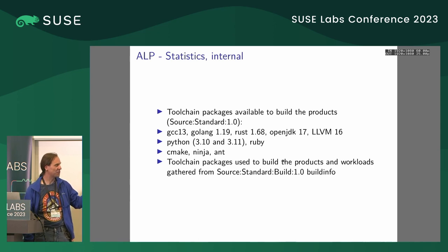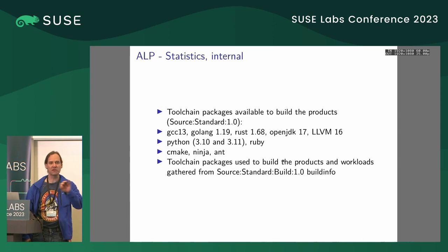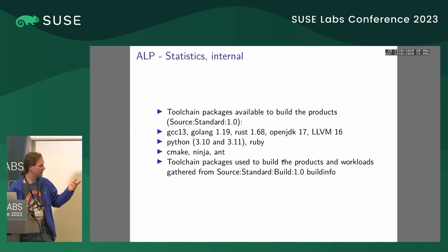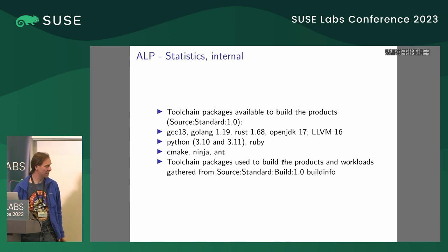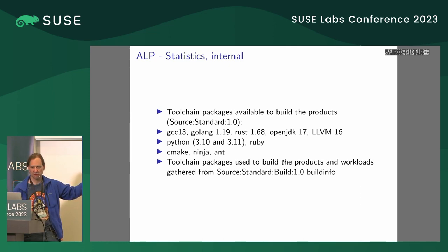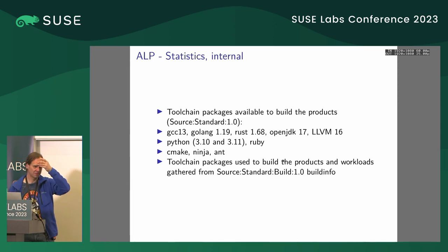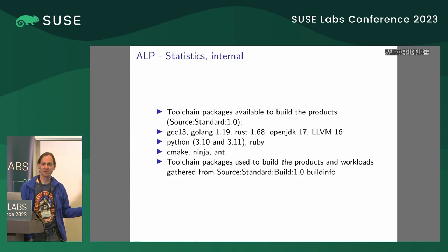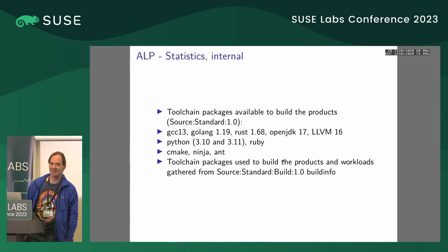I was surprised there were two Python versions, and Python 2 wasn't among them. I also found Ruby and three make tools. Probably makes sense — Ant is for Java. So I was surprised to have multiple things for everything, because we have GNU Make, Ninja, and so on.